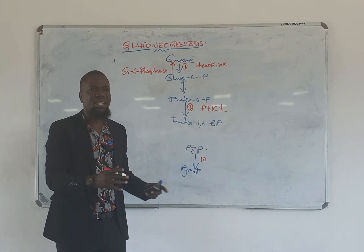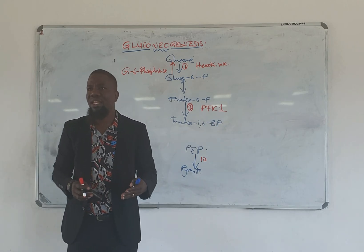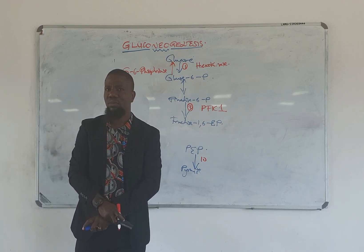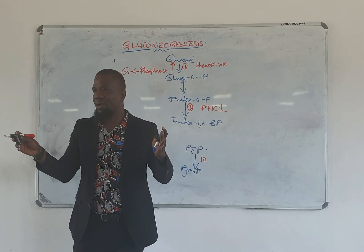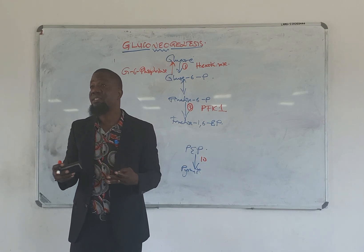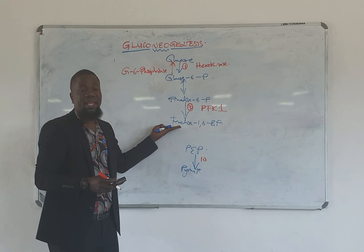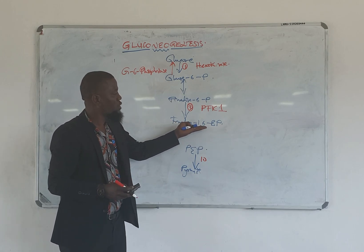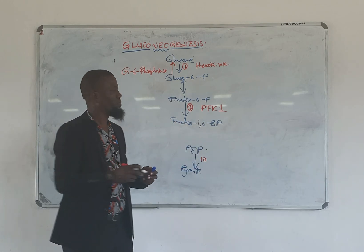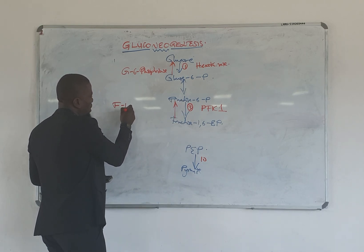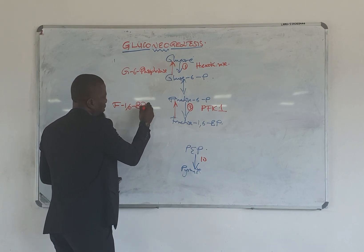Phosphofructokinase — this is a kinase. What do you think the name of the enzyme which will catalyze the reverse reaction would be called? It would be a phosphatase. We name enzymes mainly based on the reaction they catalyze and the name of the substance. So it's going to be fructose-1,6-bisphosphatase.